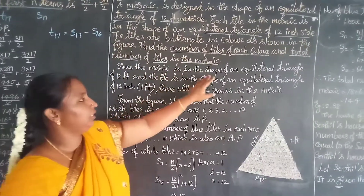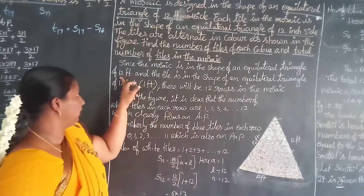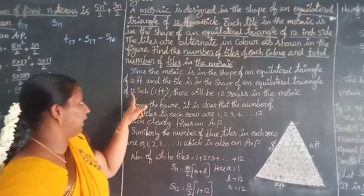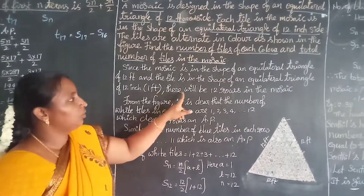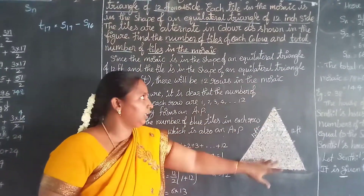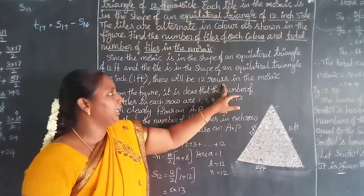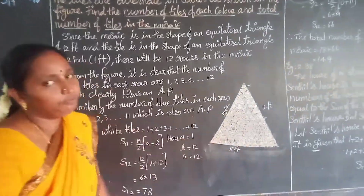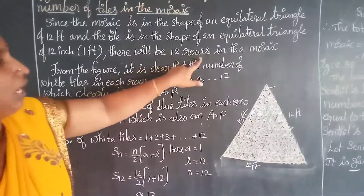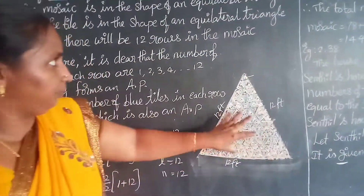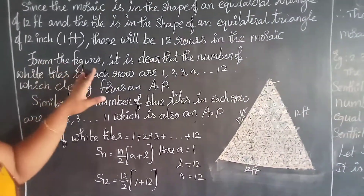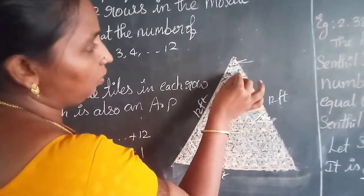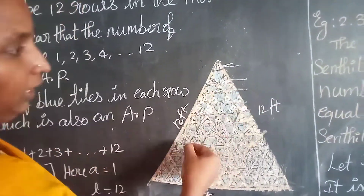Since the mosaic is an equilateral triangle of 12 feet and each tile is 1 foot, there will be 12 rows in the mosaic. From the figure, it is clear that in the first row there is one white tile, second row two white tiles, third row three white tiles, and so on.